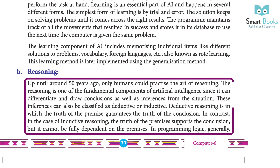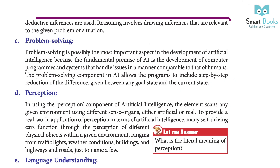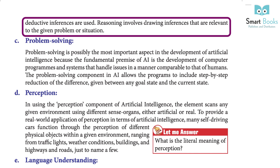B. Reasoning: Up until around 50 years ago, only humans could practice the art of reasoning. Reasoning is one of the fundamental components of artificial intelligence, since it can differentiate and draw conclusions as well as inferences from a situation. These inferences can be classified as deductive or inductive. Deductive reasoning is that in which the truth of a premise guarantees the truth of the conclusion. In contrast, in inductive reasoning, the truth of the premises supports the conclusion, but cannot be fully depended upon. In programming logic, generally deductive inferences are used. Reasoning involves drawing inferences that are relevant to the given problem or situation.